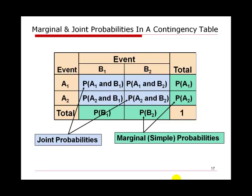From the contingency table, if we are looking at simple probability, we look at the last column or last row, which are the corresponding total values — these are called marginal probabilities. For joint probability, we always look at the center cells of the contingency table.